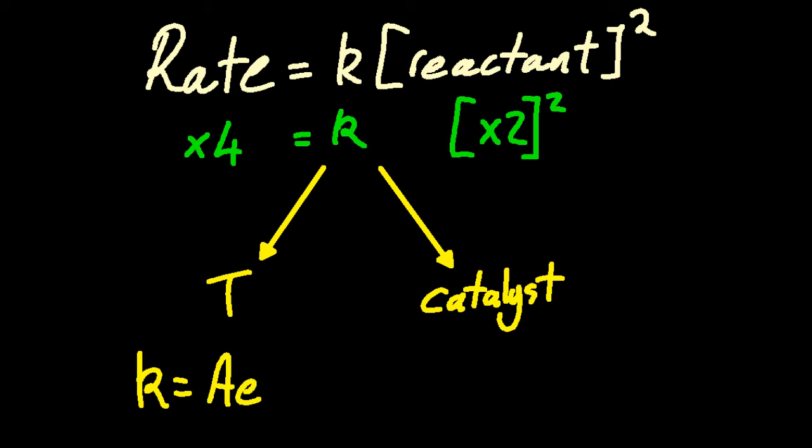And the effect of those two things on the rate constant can be calculated using this Arrhenius equation, and that's not straightforward. Look how deeply the temperature in Kelvin is buried into that natural log, as is the catalyst which will change the activation energy.